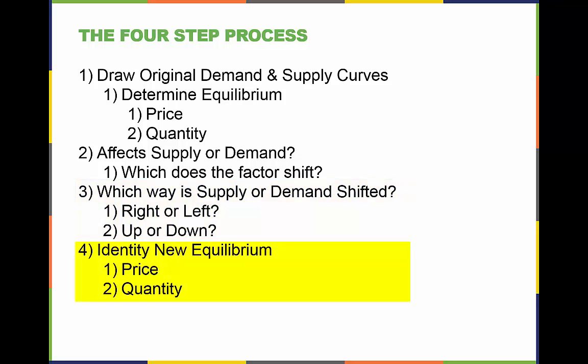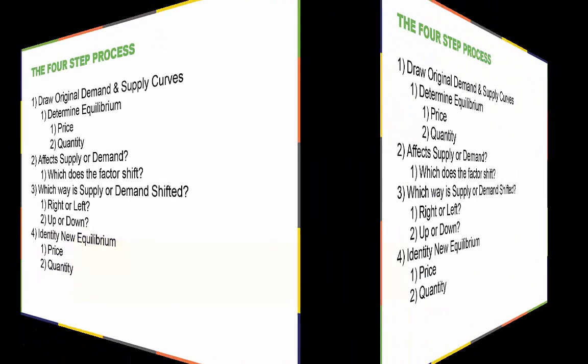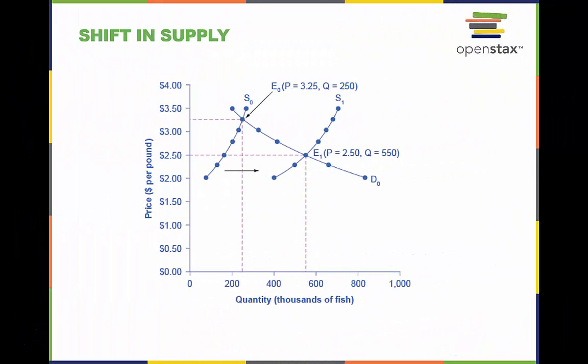Step number four: we need to identify the new equilibrium. Let's take a look at a shift in the supply of tuna caused by the factor of weather.